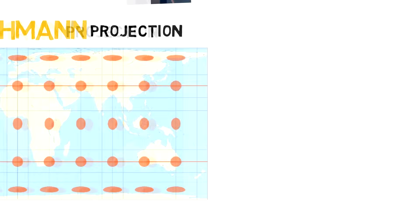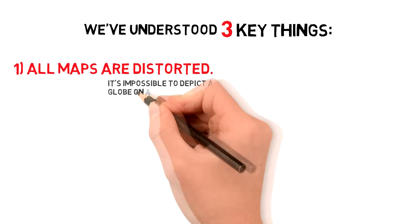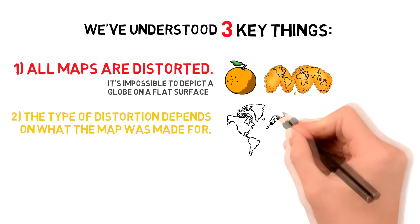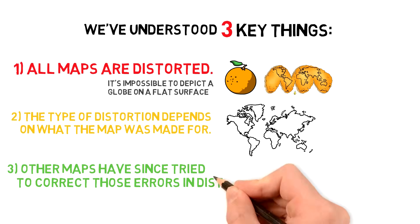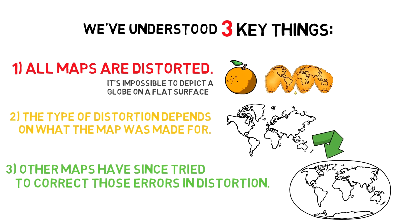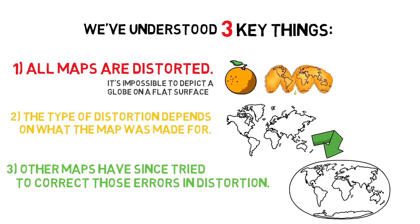So now we've understood three things. One, all maps are distorted because it's impossible to depict a globe on a flat surface. Two, the type of distortion depends on what the map was made for — the Mercator projection was made for ship travel, so it prioritizes courses and directions, sacrificing object proportions. And three, other maps have since tried to correct those distortions, either prioritizing other aspects or attempting to depict our continents in the most accurate way possible on a flat surface. This is why there are so many projections.